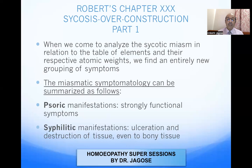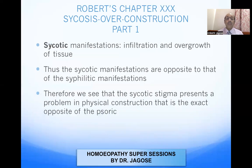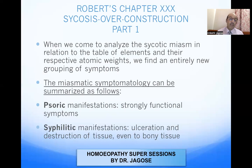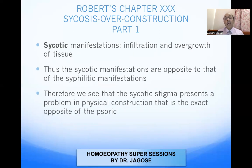In the syphilitic manifestations, you get ulceration, destruction of tissue, even of bony tissue. The hallmark of syphilitic manifestations is destruction and degeneration — ulceration, destruction, degeneration of tissues including bony tissue. In psychotic manifestations, you get infiltrations and overgrowth of tissue — hypertrophy, hyperplasia, edema, infiltration, and overgrowth of the tissue.